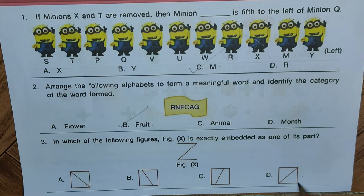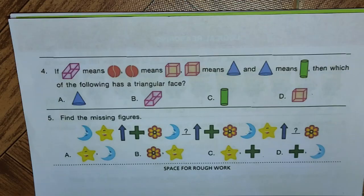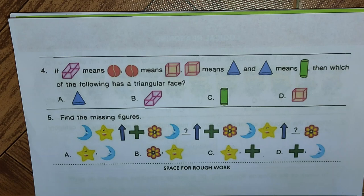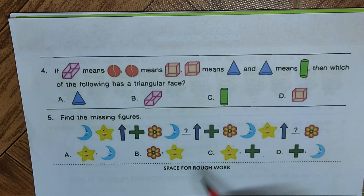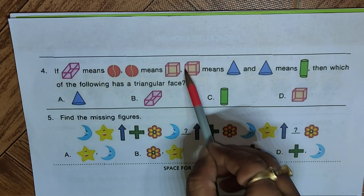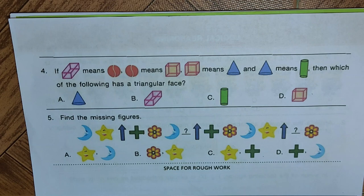Question four: if this structure means these balls, the balls mean this structure, this structure means this cone, and this cone means the cylinder — which of the following has a triangular face? The cone has a triangular face, but it is represented by the cylinder symbol. Hence the structure with the triangular face is in option D, and we mark D as the answer.